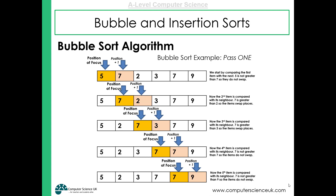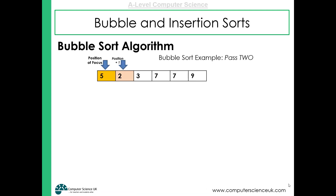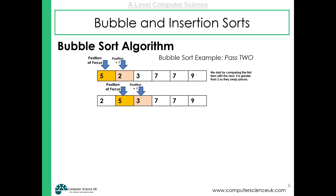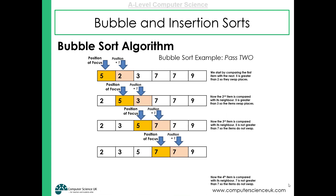At this point the algorithm has done one pass — that's what it's called when it works its way through the data set. It's done a few swaps but the data set is still not in a sorted state. So the bubble sort will do another pass. It compares five and two — not in the right order, so they swap. It compares five and three — not in the correct order, so they swap. Five and seven are in the correct order, and seven and seven are also in the correct order.